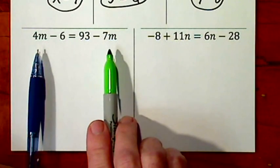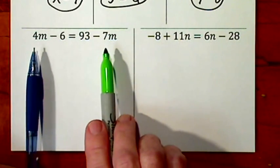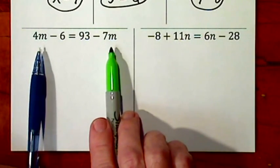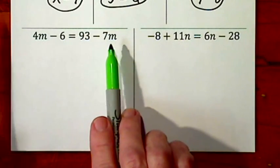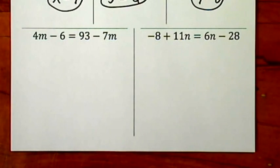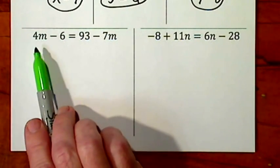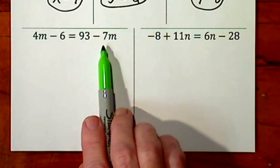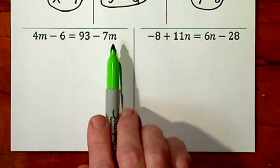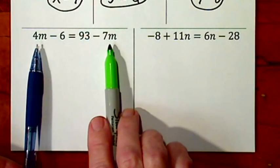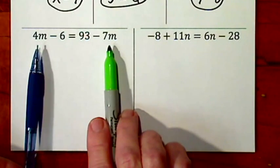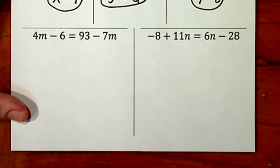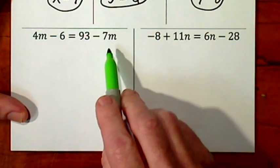Here I'm trying to get m by itself, but I have an m on each side of the equal. So I need to either get rid of a negative 7m or get rid of a 4m. And by the way, I could start with any one of these four terms in solving this equation. I could get rid of 4m. I could get rid of a negative 6. I could get rid of a 93. Or I could get rid of a negative 7m. But my greatest concern is with the variables, so I always start there. If I get rid of a negative 7m, I won't have to look at a negative for my variable. So I'll do that first.